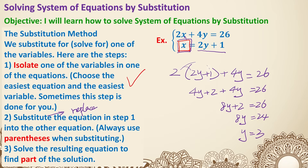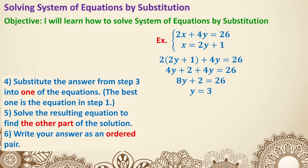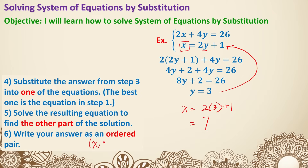It's only part of the solution because we don't have x yet. Step 4: substitute the answer from step 3 into one of the equations — preferably the one where the variable is already isolated. So x equals 2 times 3 plus 1. Step 5: solve the resulting equation to find the other part of the solution. 2 times 3 is 6, plus 1 is 7. Lastly, write the answer as an ordered pair — x comma y — so x is 7, y is 3. The solution to a system is a point on the graph, so we write it as an ordered pair.